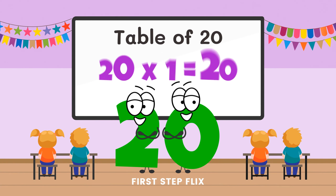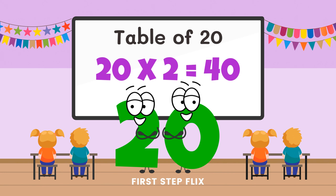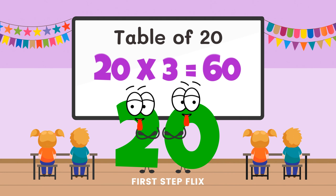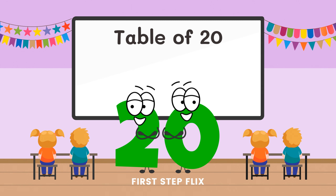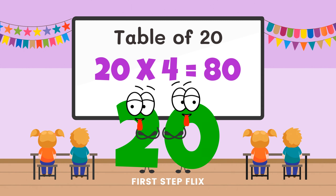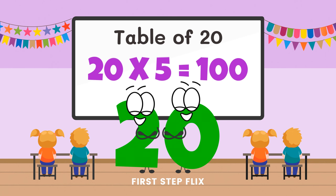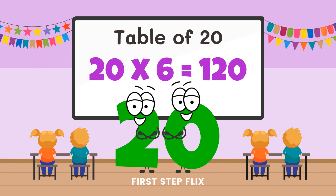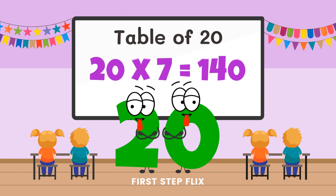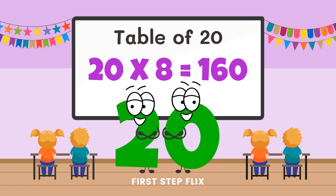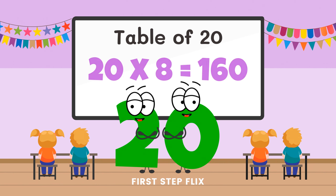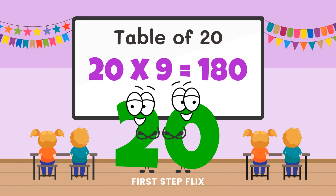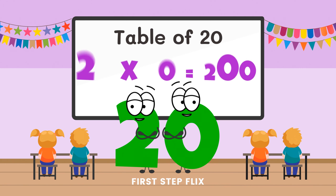Table of 20. 20 ones are 20. 20 twos are 40. 20 threes are 60. 20 fours are 80. 20 fives are 100. 20 sixes are 120. 20 sevens are 140. 20 eights are 160. 20 nines are 180. 20 tens are 200.